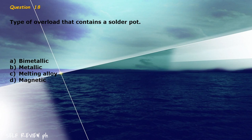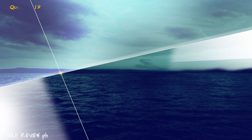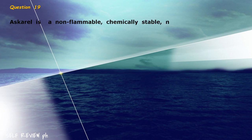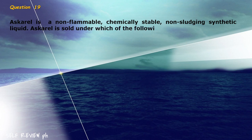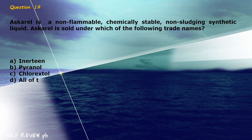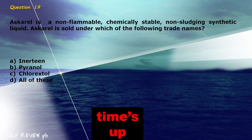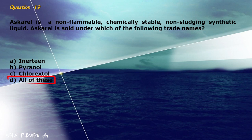Question 19: Ascurel is a non-flammable, chemically stable, non-sludging synthetic liquid. Ascurel is sold under which of the following trade names? A) inertine, B) pyranol, C) clorex dole, D) all of these. The correct answer is letter D, all of these.